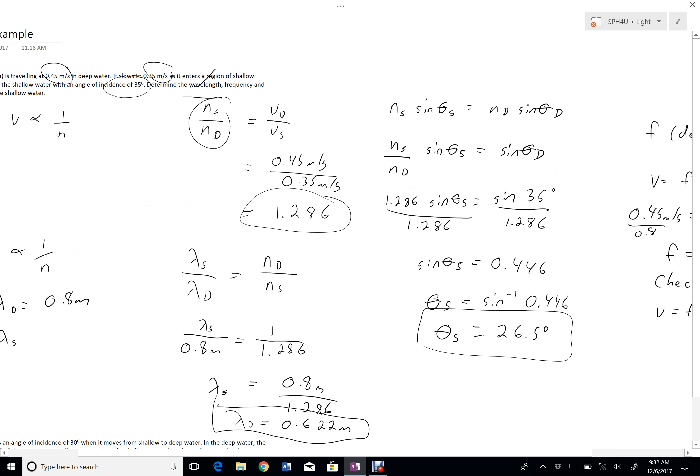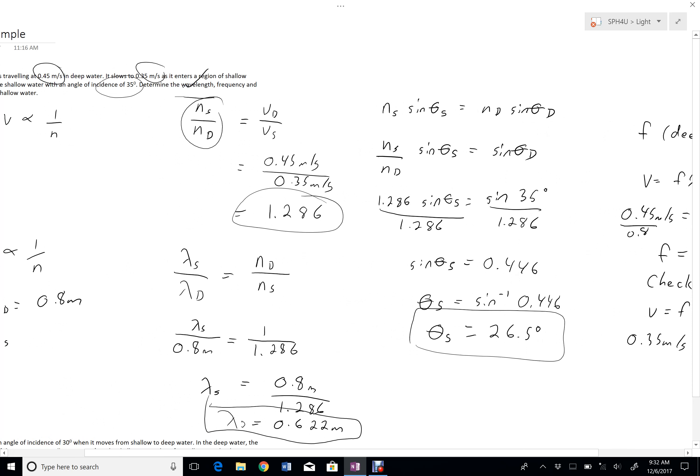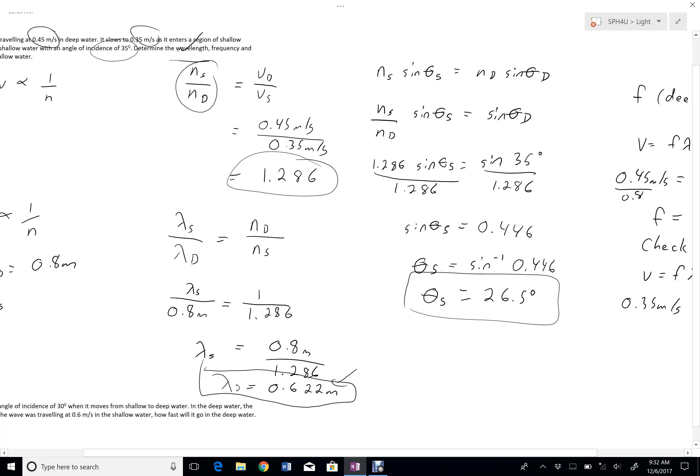I can come up with that frequency in shallow water. And that'll be a nice way of checking to make sure that I didn't make any mistakes, at least in the parts of the question that involved this. So the speed in shallow water was 0.35. The wavelength was 0.622.